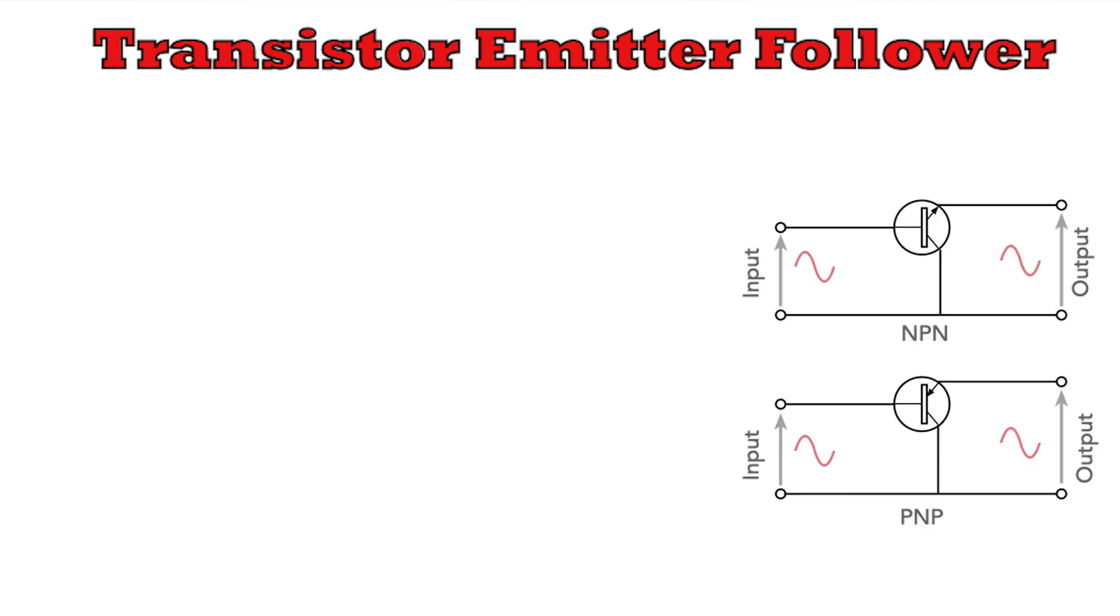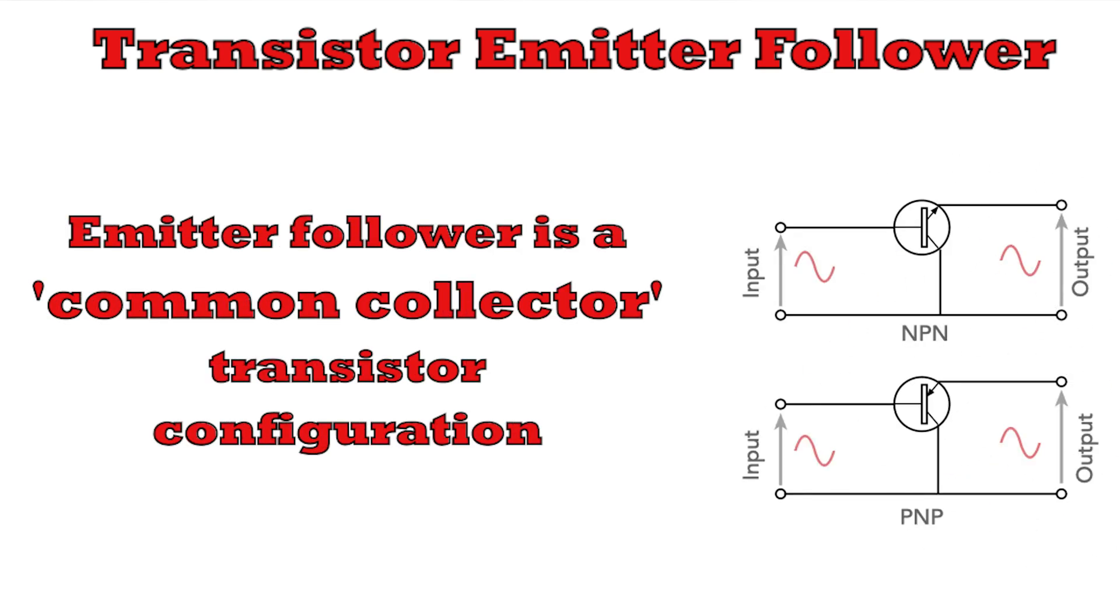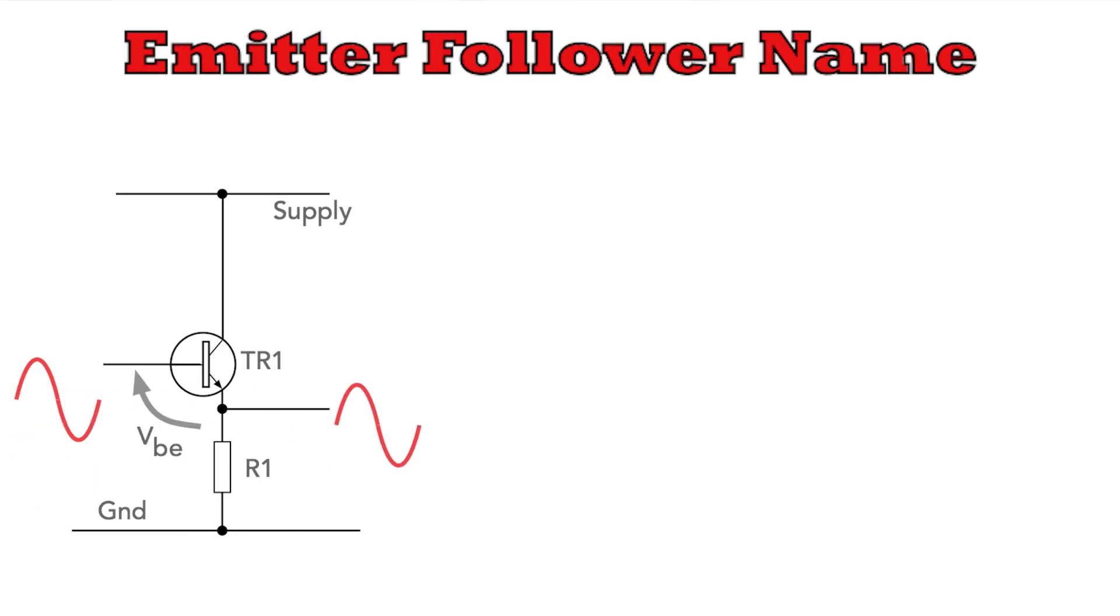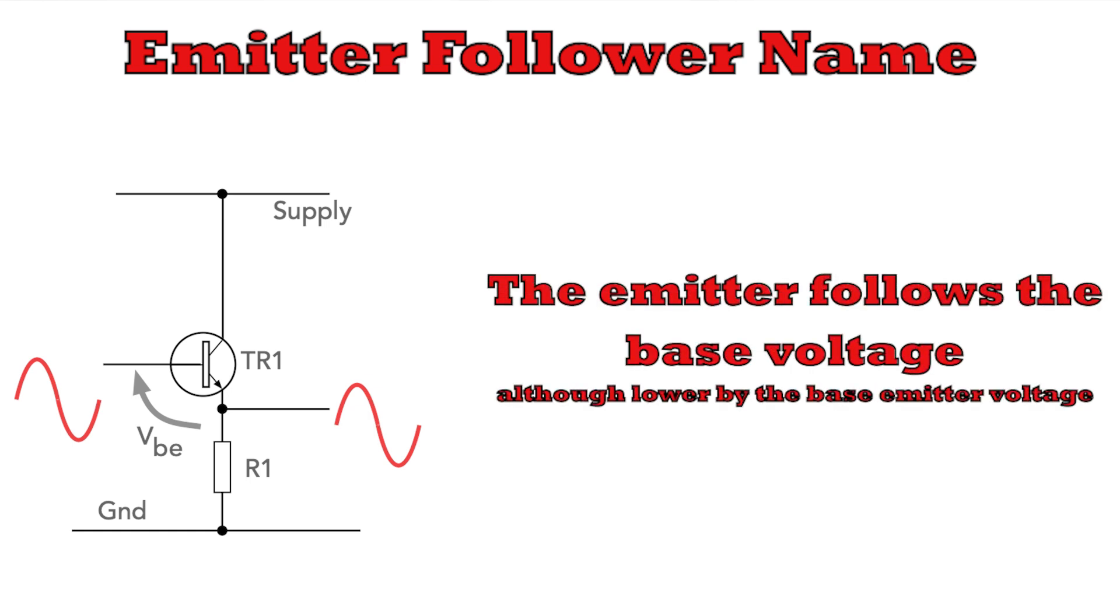In essence, an emitter follower is a common collector configuration of a bipolar junction or BJT transistor circuit. It's called an emitter follower because the emitter voltage closely follows the base voltage even though there's a small voltage drop across the base emitter junction.